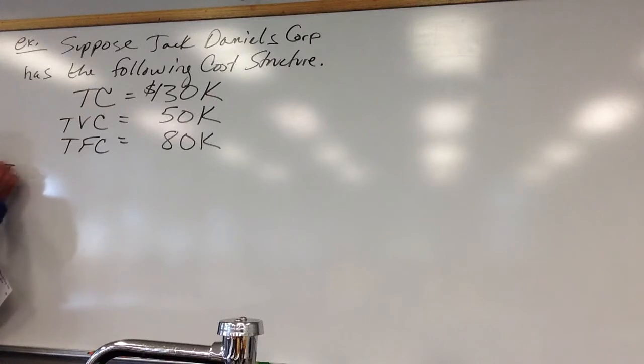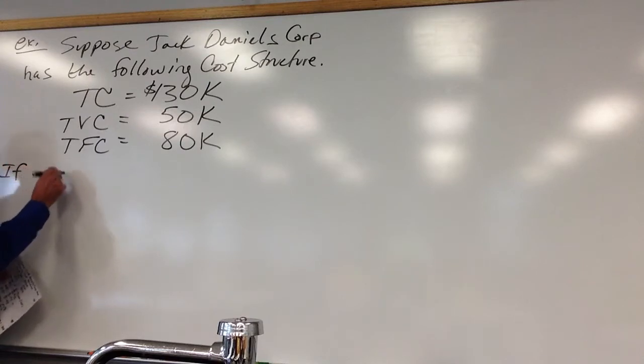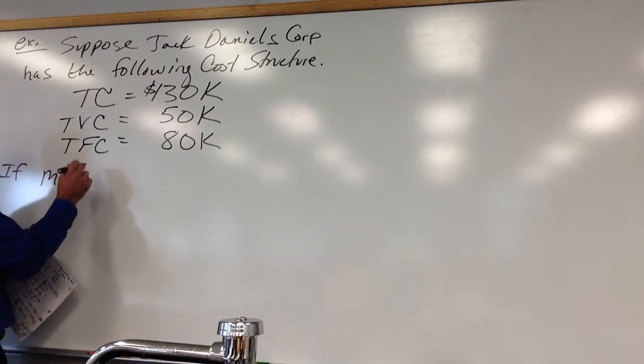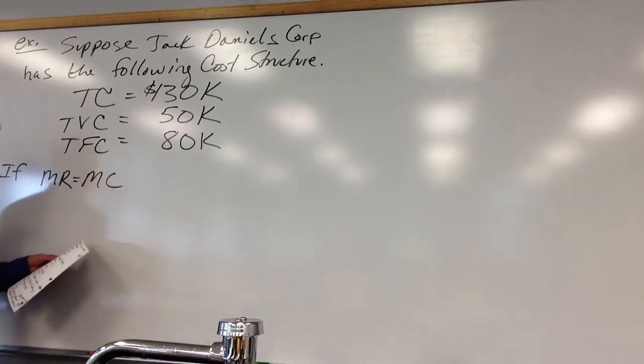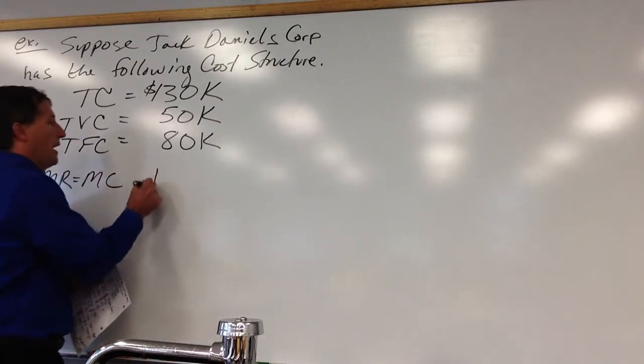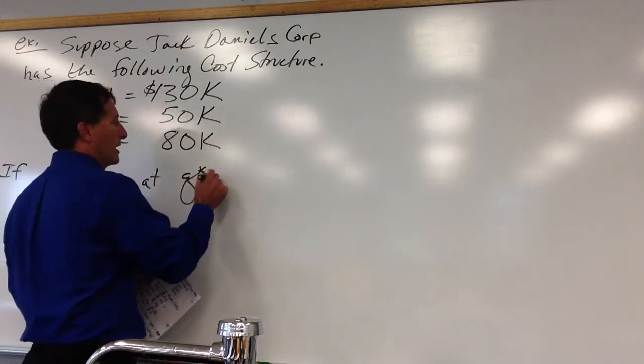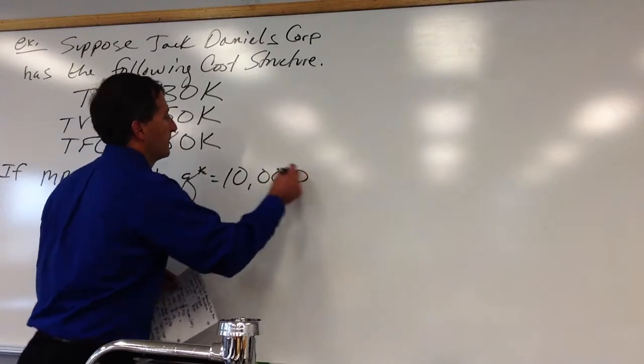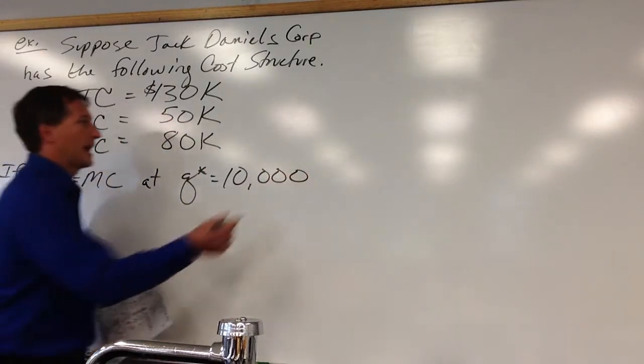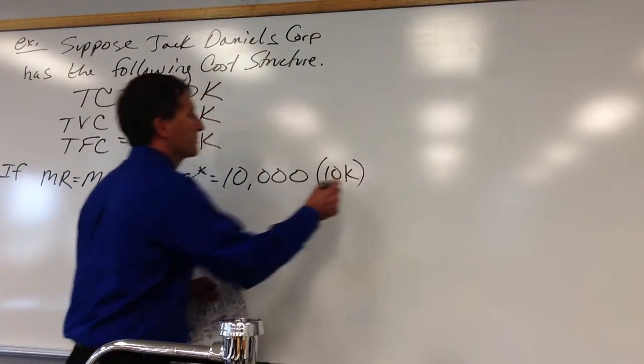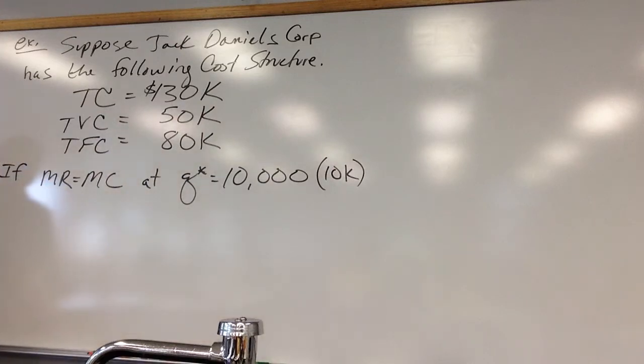We talked about maximizing profits last time. Let's just say that if the marginal revenue of the last bottle that Jack produced is equal to the cost of the last bottle at a quantity of 10,000 bottles, so let's say that is going on.